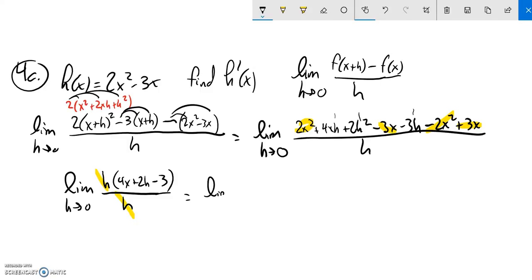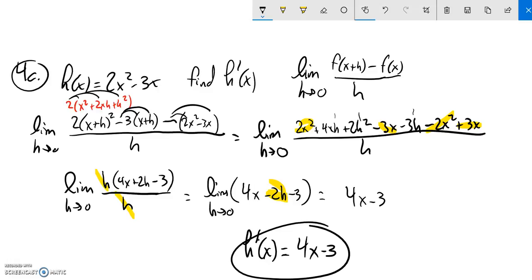So now I have the limit as h approaches 0 of 4x plus 2h minus 3. As h goes to 0, this term right here goes to 0. So I'm left with 4x minus 3. So the derivative of h is 4x minus 3. That's the steepness of this shape at any given x.